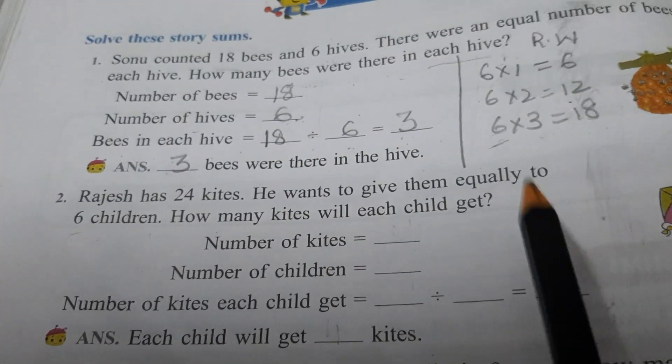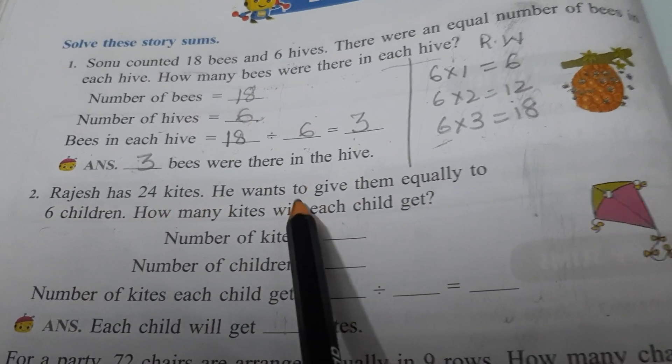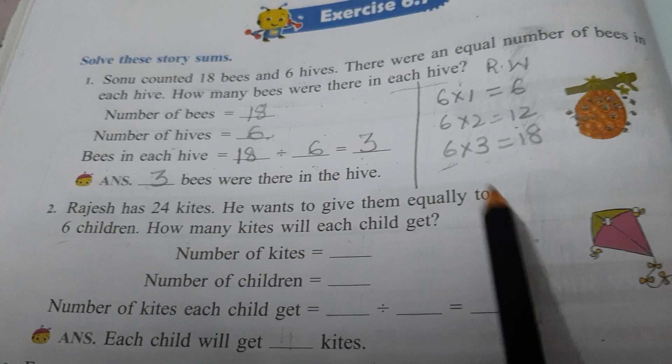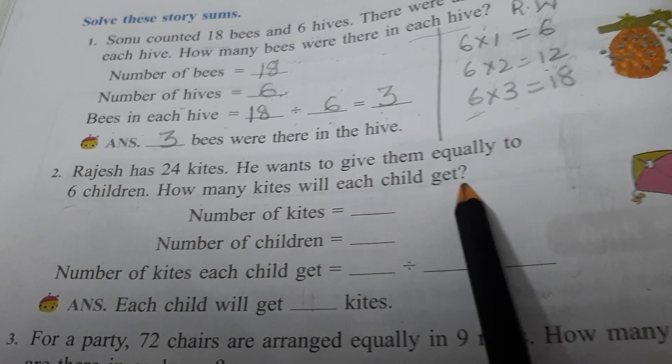Similarly, let's do second sum. Rajesh has 24 kites. He wants to give them equally to six children. How many kites will each child get?